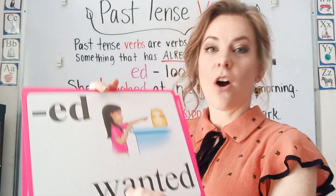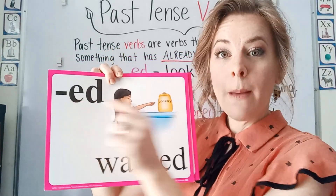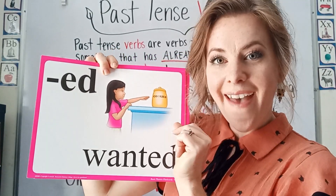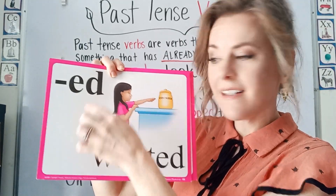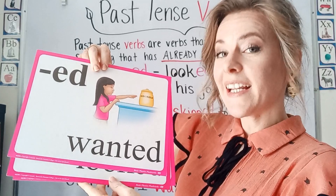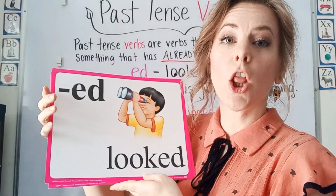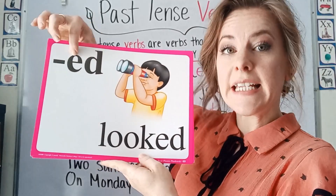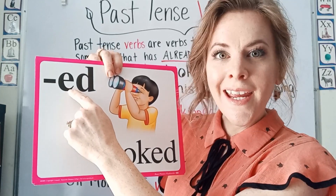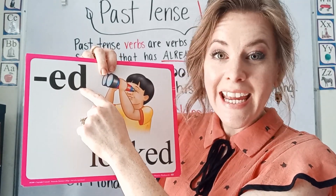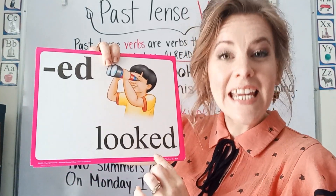The first sound we talked about was E-D, as in 'wanted' or 'dead' — the E makes a short sound, E-E-E, and then you have the D. Now, the second sound we're going to look at is the T sound in 'looked.' This E-D sounds like a T — it doesn't sound like an E, it doesn't sound like a D.